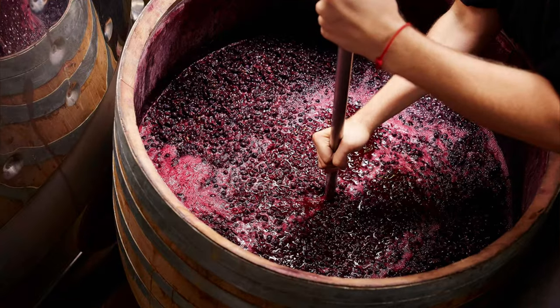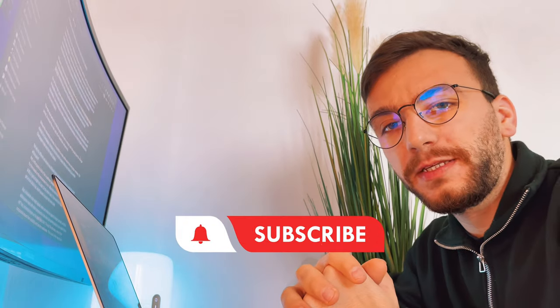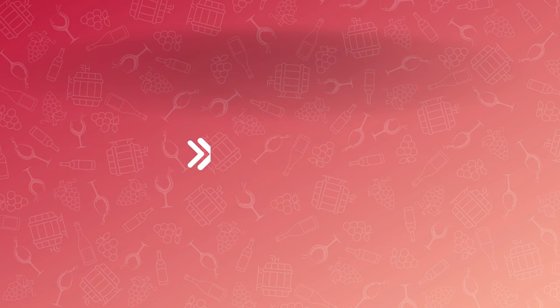So to transfer these color compounds from the grapes to the wine, we have to use a process called maceration. I'm working on a video explaining this whole process, so don't forget to subscribe so you won't miss it. The main idea behind it is that the grape skins are in contact with the grape juice for a longer period to extract the color and other beneficial compounds.